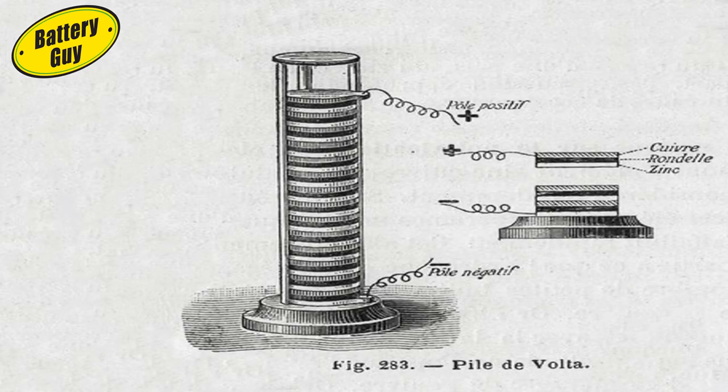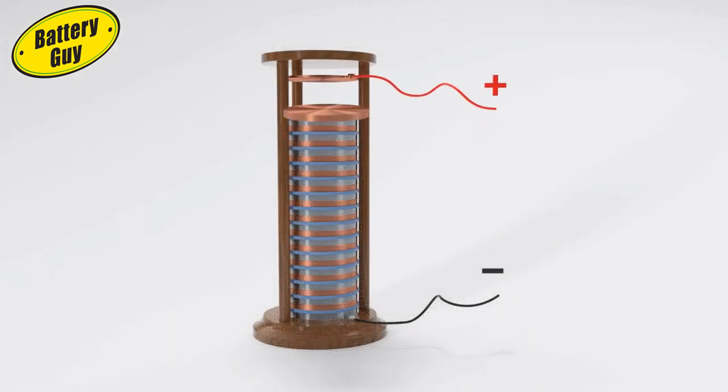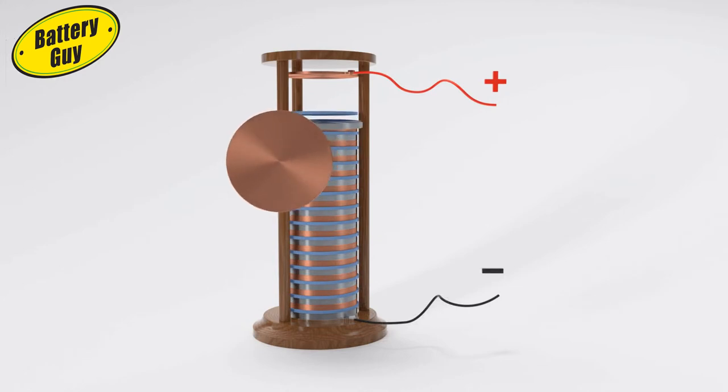The basic principle of battery construction has not changed to this day. Batteries are made up of cells, each cell has a positive cathode and a negative anode.